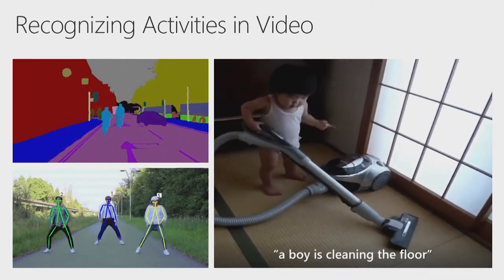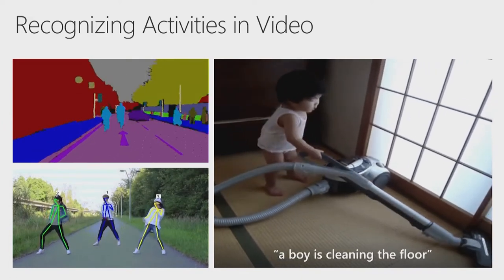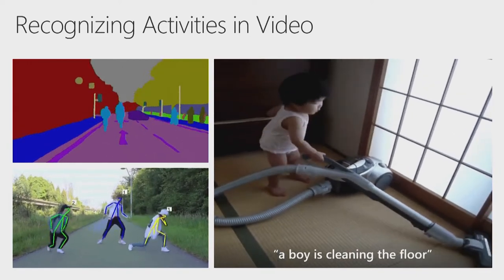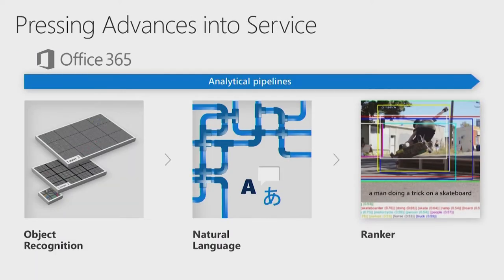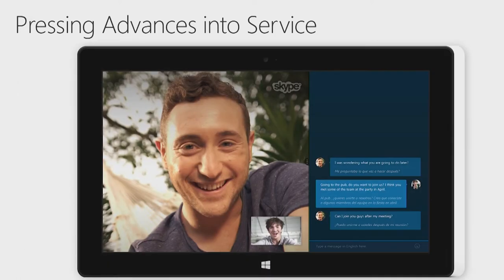The idea of pressing these advances into practice is a reality at major IT centers. Office 365 uses an analytical pipeline involving object recognition and natural language analysis to do automatic captioning of photos in PowerPoint. The Skype translator does speech-to-speech translation — just a few years ago this was a far-out lab project, like the kind of translator Captain Kirk would use. Now we consider it commonplace. Google does it, Microsoft does it, and it's sitting in Skype.